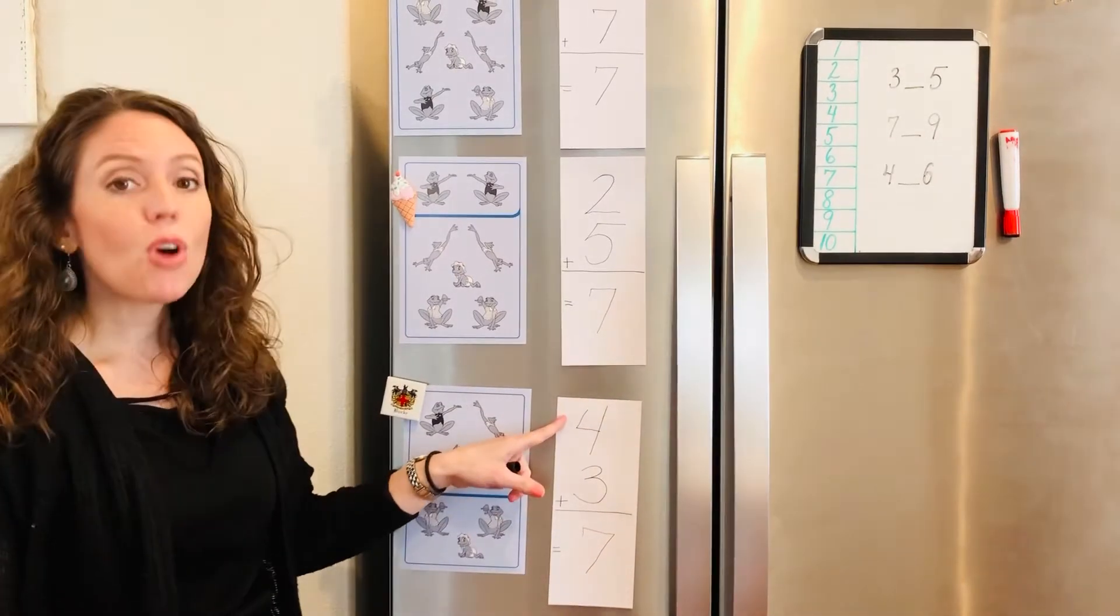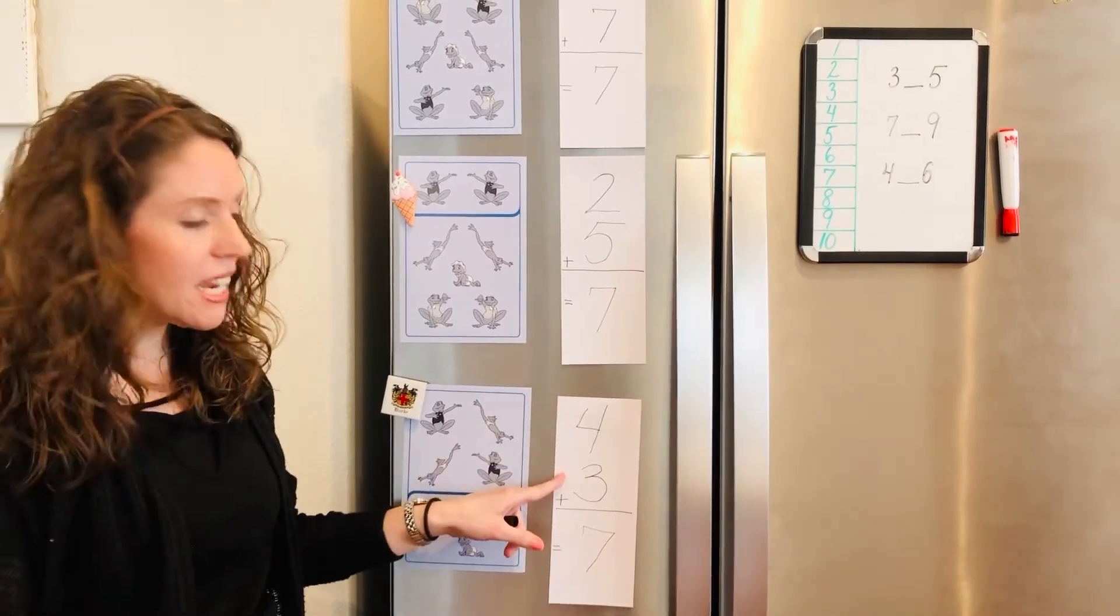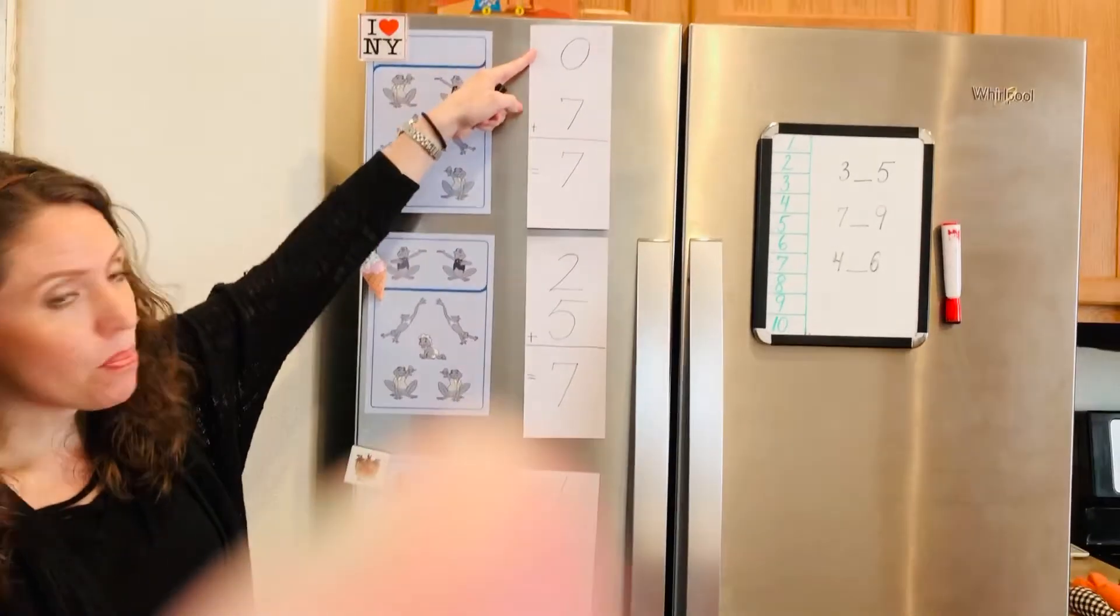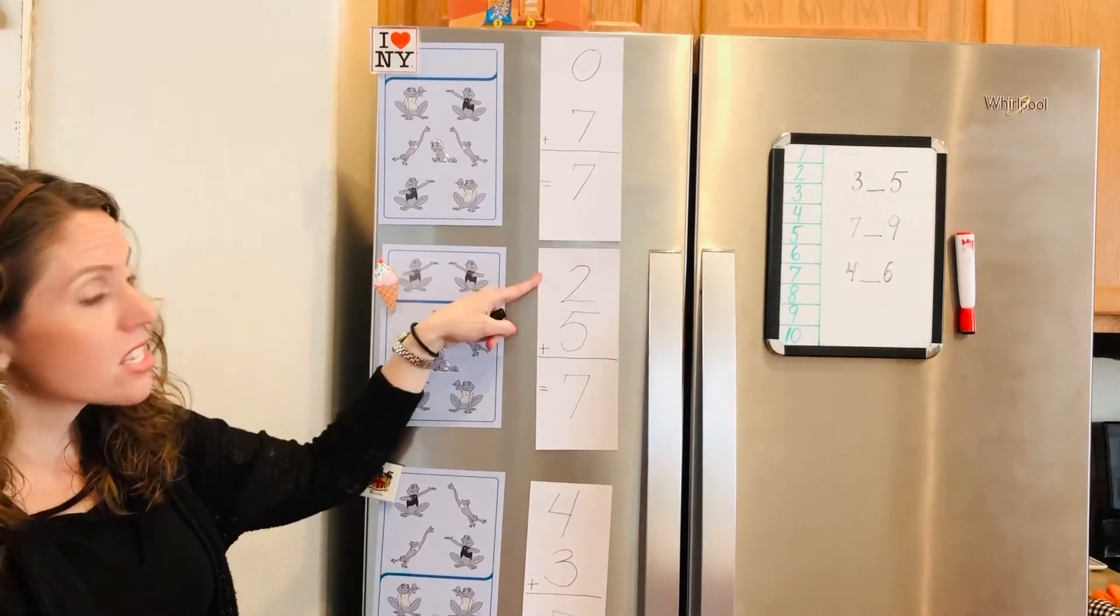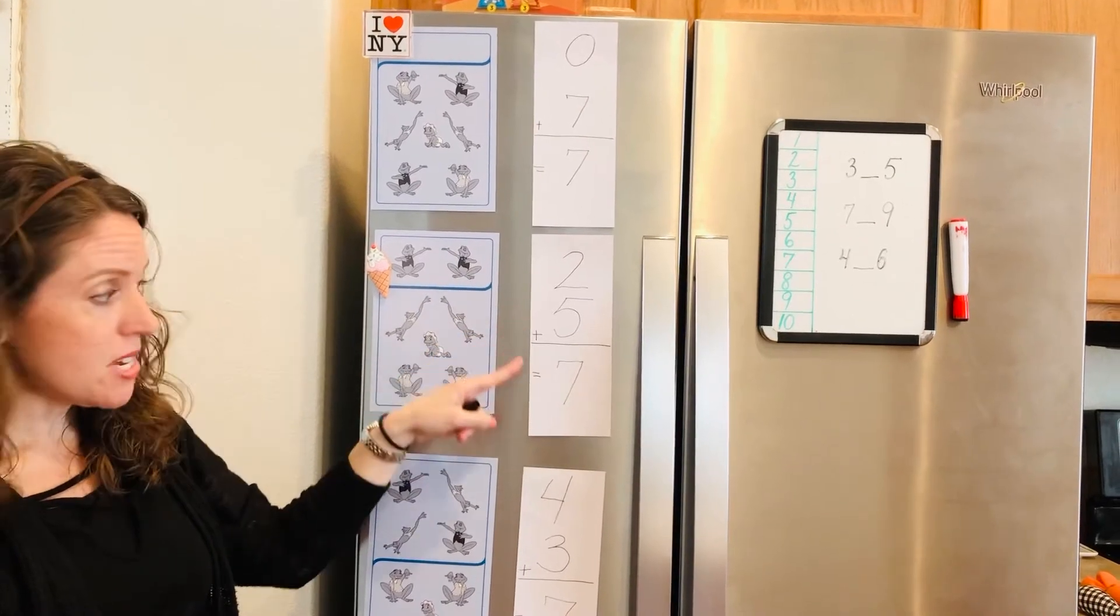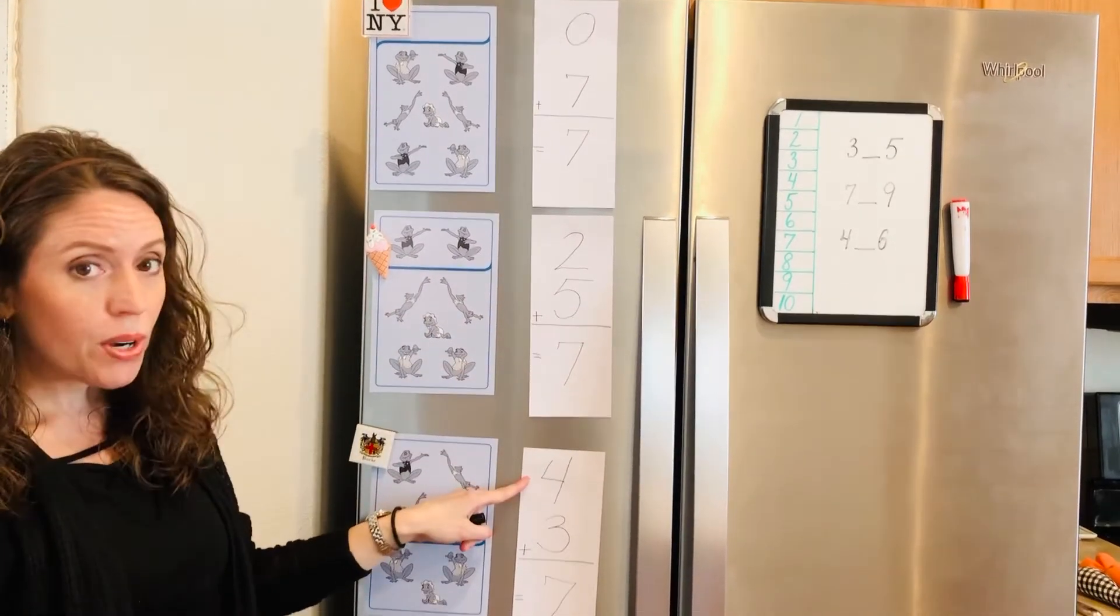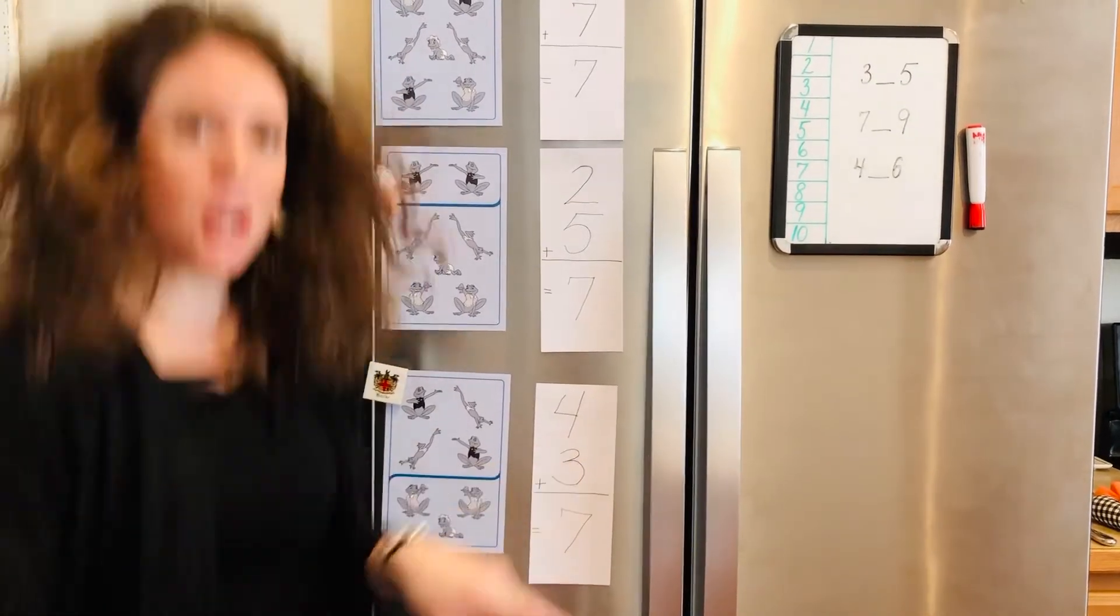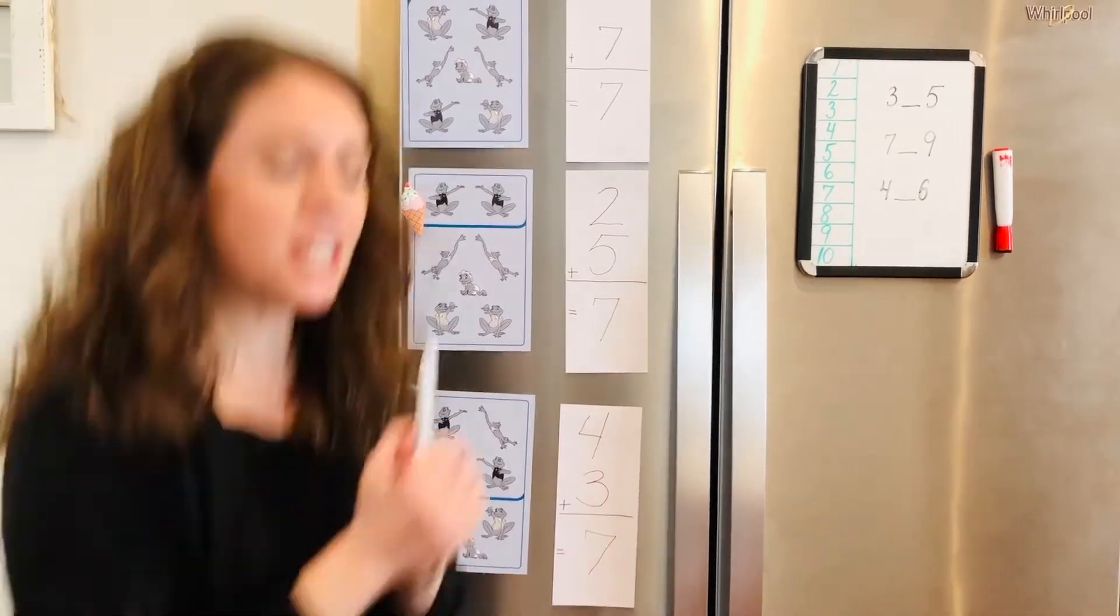Say it with me. Four plus three equals seven. Now let's say zero plus seven equals seven. Two plus five equals seven. Four plus three equals seven. Let's do a frog jump together. Over here, frog jumping. And we have some cars.